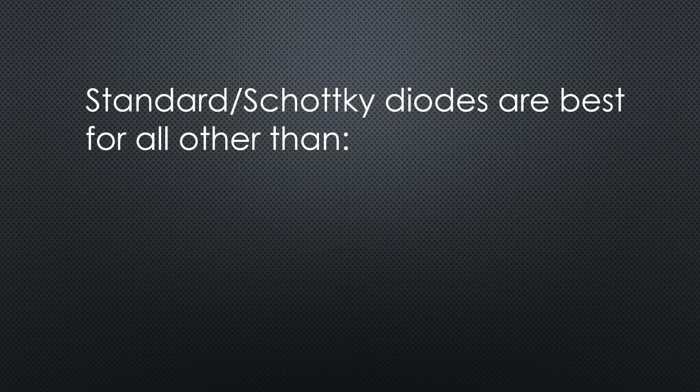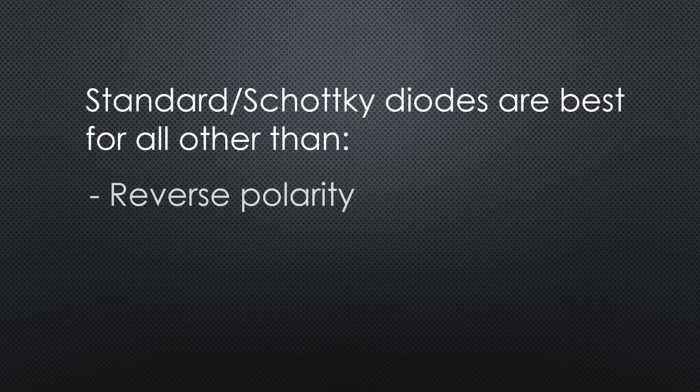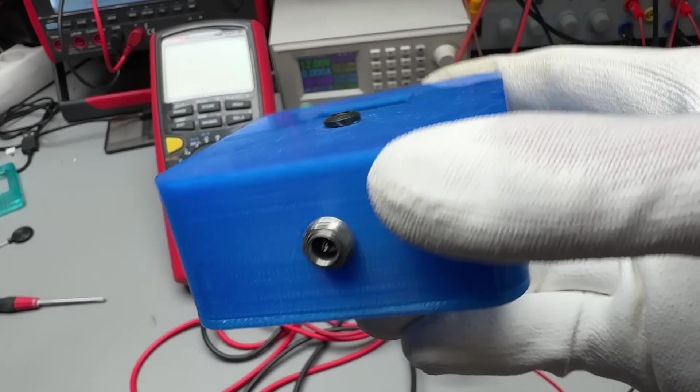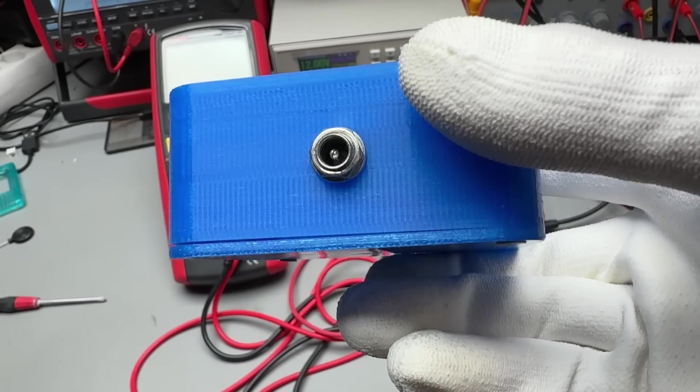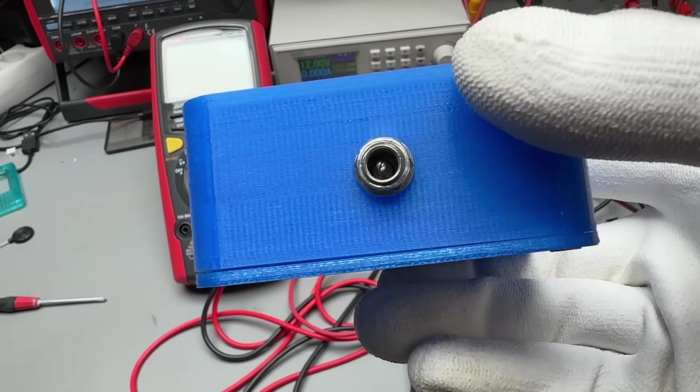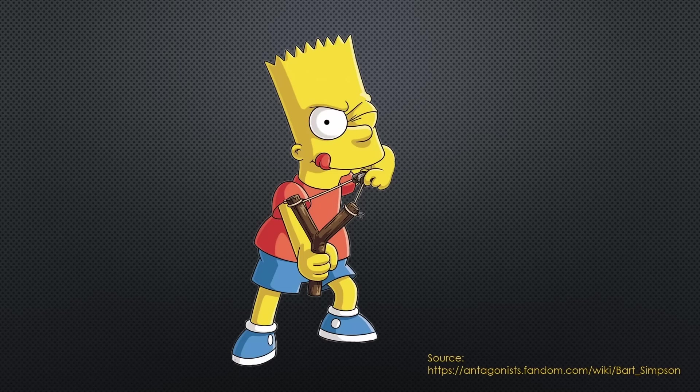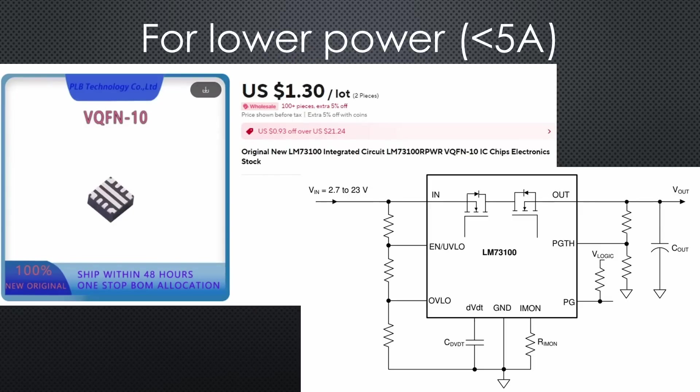So standard or Schottky diodes are the right choice for use cases other than reverse polarity or reverse current protection. What are typical use cases in your projects? As shown before, reverse voltage protection should be included in all projects with an external power plug because you never know what the user does and if it uses the correct power supply. If you do not need high currents or voltages, you could go for an LM73100 with integrated MOSFETs.